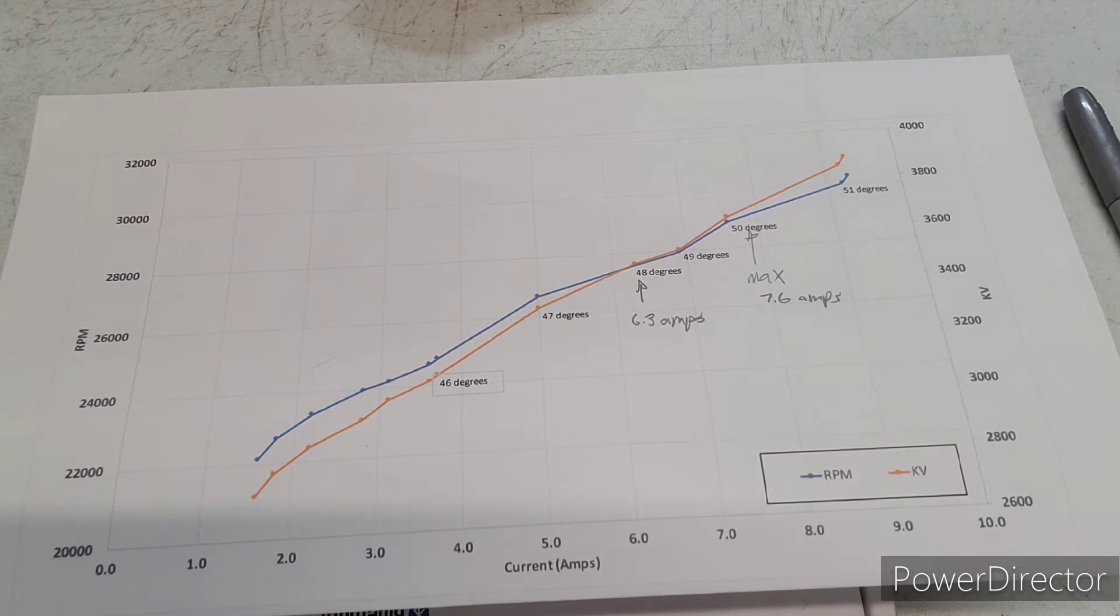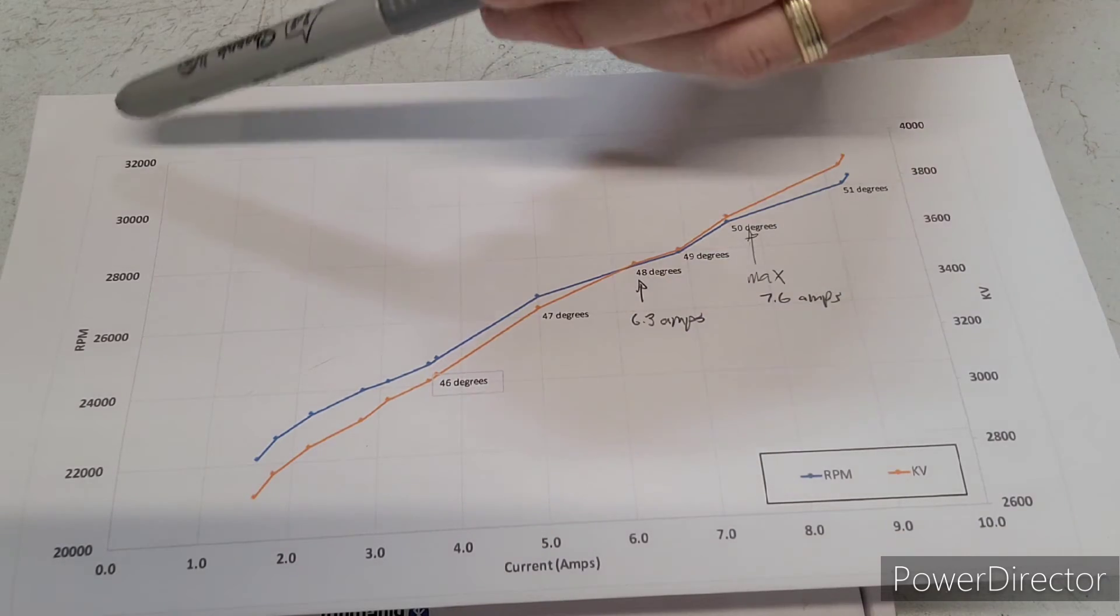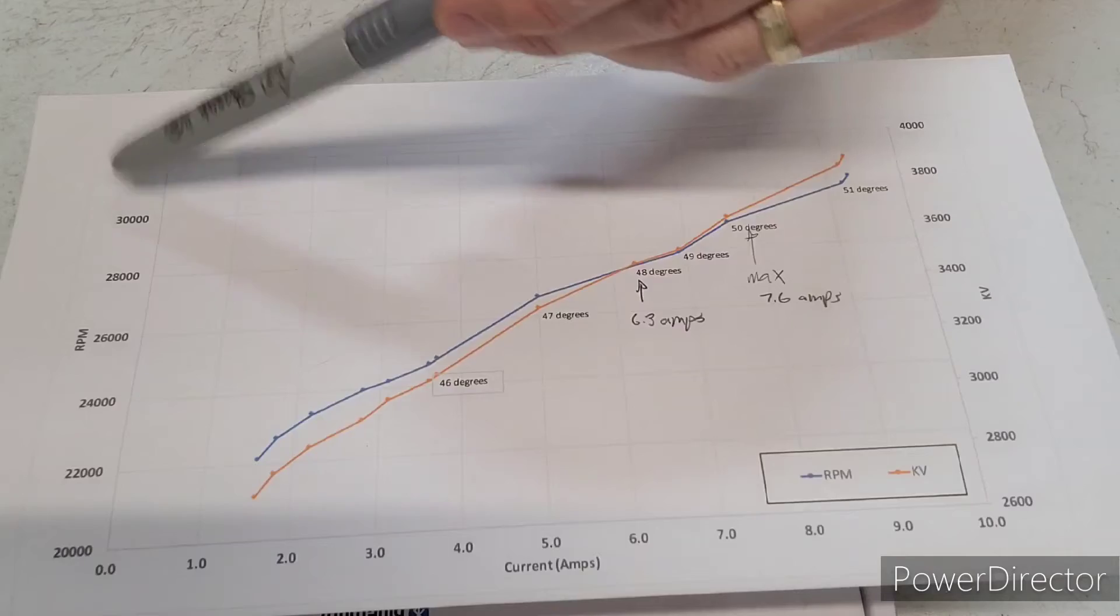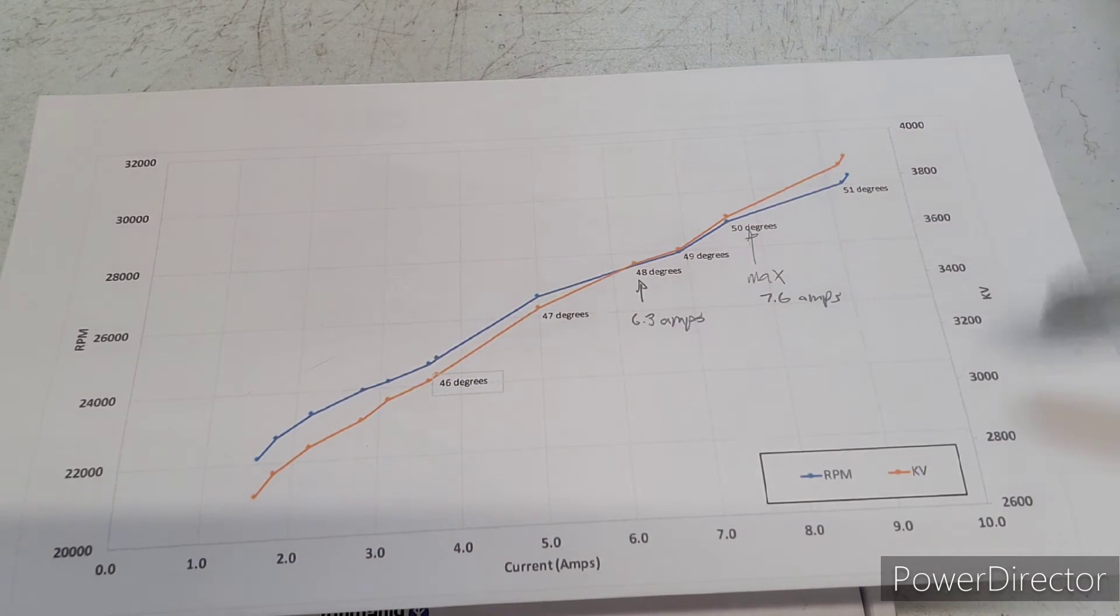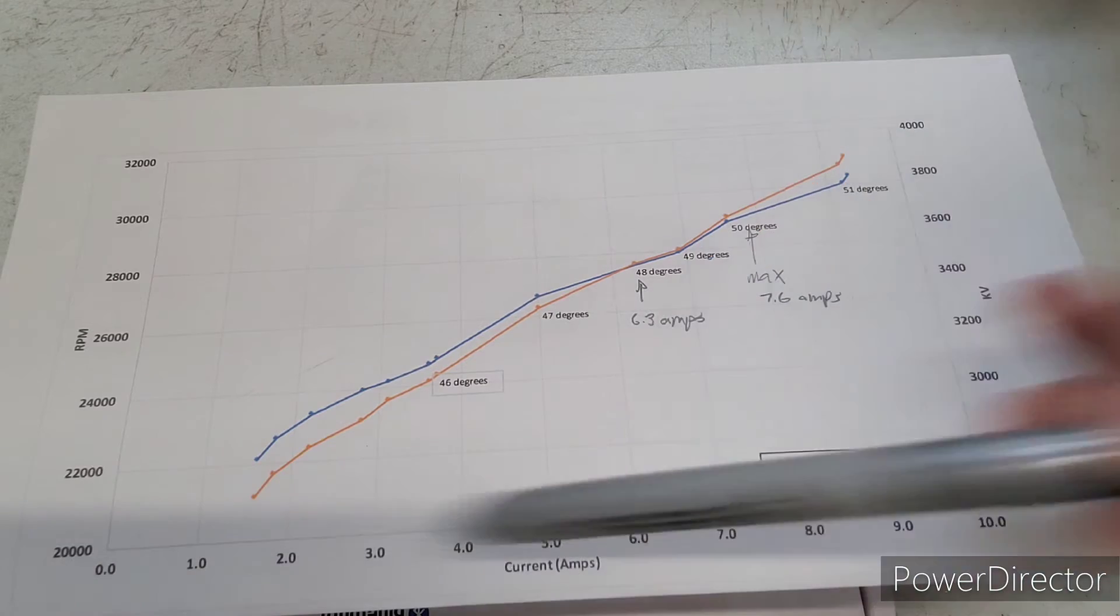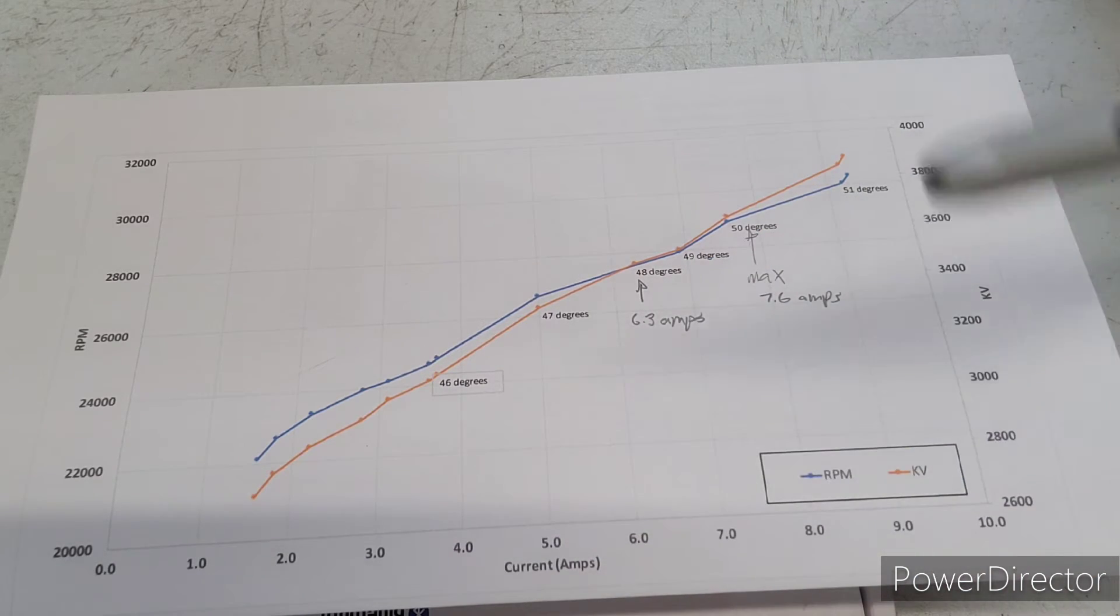And then you don't have to graph it, but I just graphed it to really illustrate the point. So what we're looking at on this graph is the scale over here is RPM. The scale over here is KV and along the bottom is current and amps.